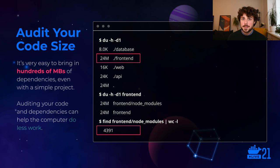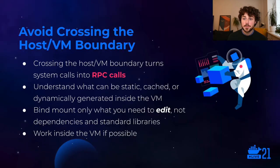One of the easiest ways to do that is to audit your dependencies. It's super easy to pull in tens or hundreds of megabytes of dependencies and thousands of files — for example, a package.json with four direct dependencies can result in 24 megabytes of files and over 4,000 of them. You should be cognizant of that. Especially for static dependencies, there's really no reason to be pushing those over a virtual file system. In general, you should really avoid crossing the host-VM boundary for anything — all of those system calls become RPC calls, so if you can statically cache something or dynamically generate it inside the container, just don't cross that VM boundary.